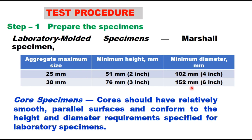If aggregate maximum size is 38 mm, the minimum diameter should be 150 mm. Importantly, this test can also be conducted on core specimens taken from the field, but cores should have relatively smooth parallel surfaces and conform to the height and diameter requirements as given in the table.